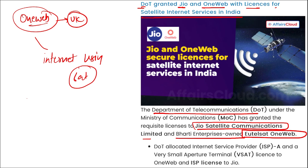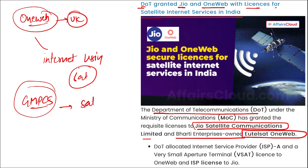The license name is GMPCS — Global Mobile Personal Communication by Satellite license. This license authorizes providing mobile communication services using satellite. There is also an ISP (Internet Service Provider) license — a Very Small Aperture Terminal license — that was provided to OneWeb and Jio.